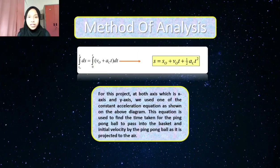So my part is about method of analysis. For this project, we use one of the constant acceleration equation as shown on the upper frame. This equation is used to find the time taken for the ping pong ball to pass into the basket and initial velocity by the ping pong ball as it is projected to the air.